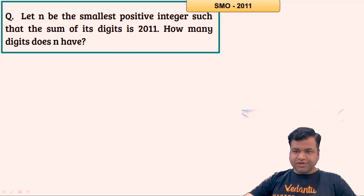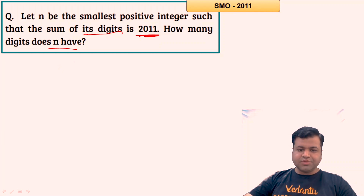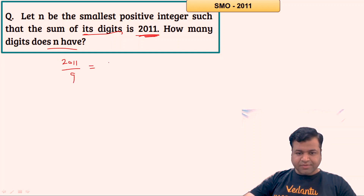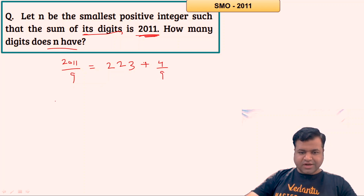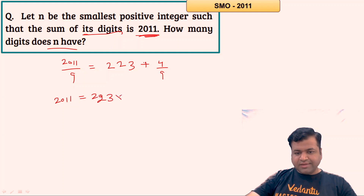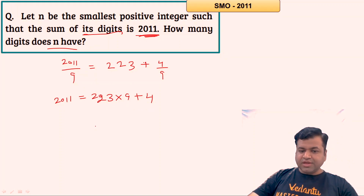Let's proceed to the next question, from 2011. It says: n is the smallest positive integer such that the sum of its digits is 2011. How many digits does n have? To minimize the number of digits, we should maximize the face value of each digit, so let's set as many digits as possible to 9. Dividing 2011 by 9: the quotient is 223 and the remainder is 4. So we can write 2011 = 223 × 9 + 4.